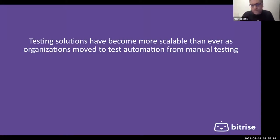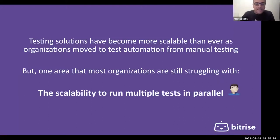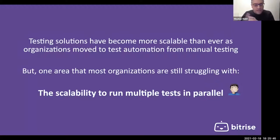One area most teams still struggle with is scalability: running multiple tests in parallel. For example, with 1000 test cases run on every PR, execution could easily exceed two or three hours, which is unacceptable.